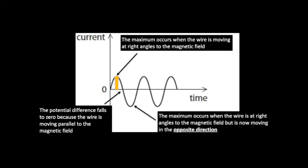And the minimum occurs when the wire is moving parallel to the magnetic field. And once again, the negative maximum occurs, and this cycle repeats. This is the first type of generator. This is an alternator.